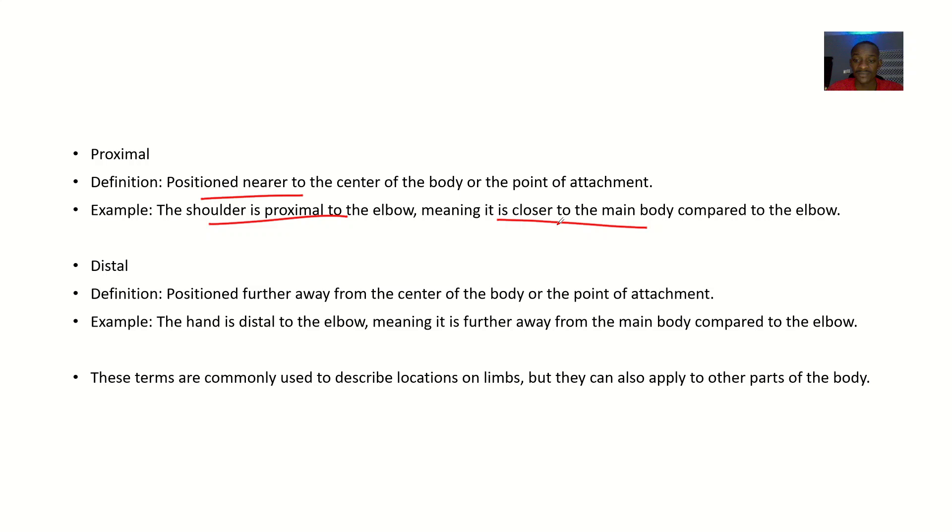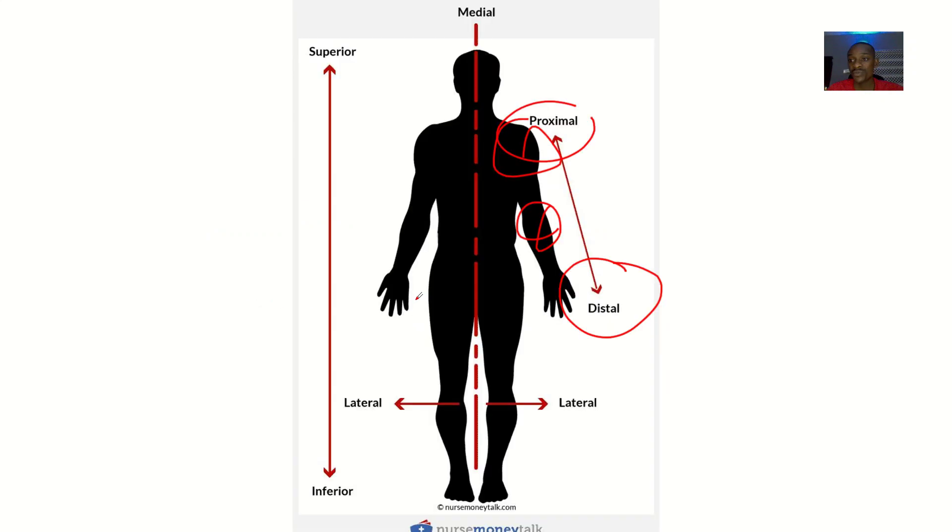Now let's look at distal. Distal simply means something that is positioned far away from the center of the body. When it says center of the body, it is this midline, this mid-sagittal line. So anything that is close to the mid-sagittal line is proximal. Anything away from the sagittal line is distal.